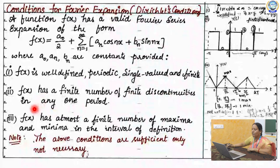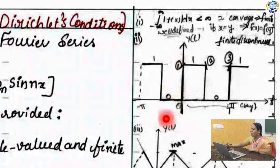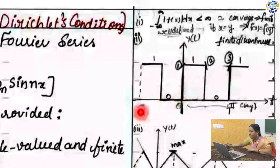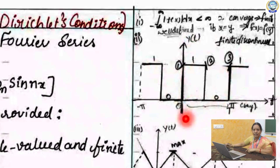The second condition: f(x) has a finite number of finite discontinuities in any one period. In order to understand this, please observe the graph. On the x-axis, we consider the fundamental period T, and on the y-axis we have the function y(t). If you observe this graph, you will see 1, 2, 3 — there are three discontinuities. That means we have a finite number of discontinuities in this graph. This is clearly a discontinuous graph.